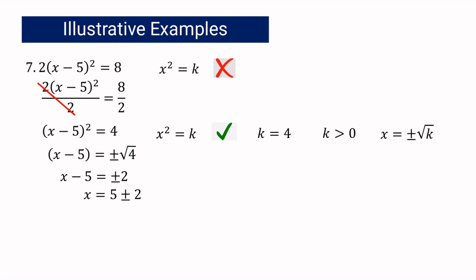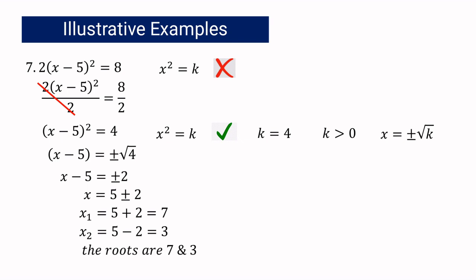Combining 5 with positive and negative 2: x₁ equals 5 plus 2, which is 7, and x₂ equals 5 minus 2, which is 3. Therefore, the roots are 7 and 3.